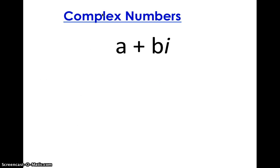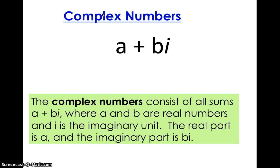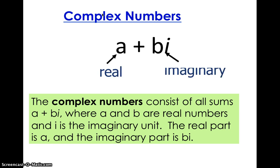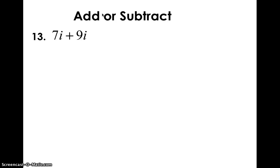When you put real and imaginary numbers together you get complex numbers, which are all sums of the form a plus bi. Here a and b are real numbers, and i is our imaginary unit. We call the a part the real part, and the bi part the imaginary part. Once you understand complex numbers, the next step is operations. Adding and subtracting: 7i plus 9i — think of it like 7x plus 9x; combine like terms to get 16i.